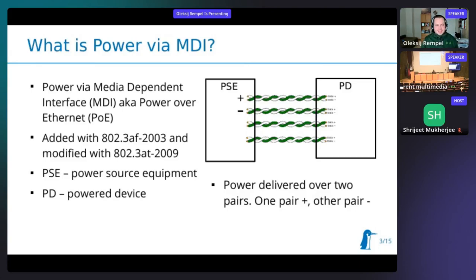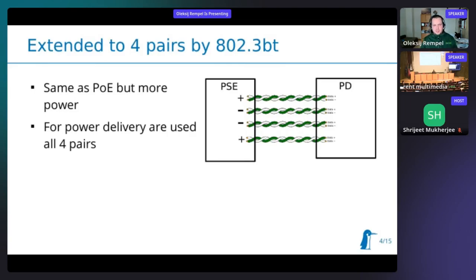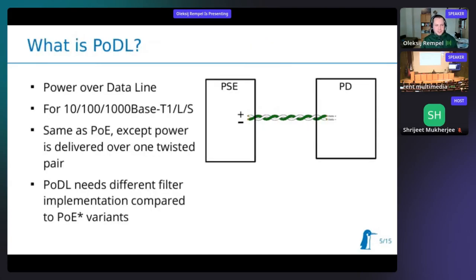It was extended to deliver even more power with amendment 802.3at in 2009. As you can see in the picture, we have two sides: PSE, the power source equipment, and PD, the powered device. With time, more devices consumed more power, so the specification was extended further to use all four twisted pairs. Finally, we got Ethernet into industrial and automotive applications and needed to reduce the number of cables, so we now have a specification for only one twisted pair.